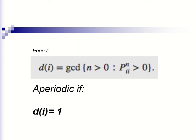If we look at this mathematically, the definition of a period is d, and it's equal to the greatest common divisor of n greater than 0, for all n where the probability of going from state i back to state i in n steps is greater than 0.